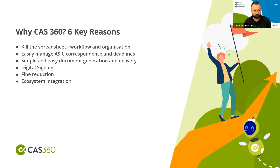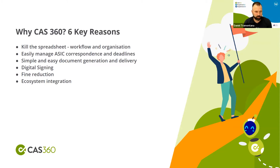Here are six key reasons to choose CAS 360. First, we want to kill the spreadsheet — CAS 360 is about better workflow and better organising your compliance requirements. People are using CAS Desktop alongside spreadsheets to manage annual reviews, payment dates, reminders, and follow-ups. CAS 360 eliminates the need for spreadsheets, calendar systems, and separate reminder systems. It allows you to easily manage correspondence and deadlines by pushing information to you, rather than you having to go to ASIC to get it.